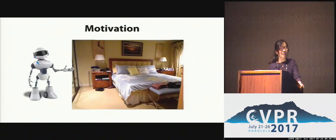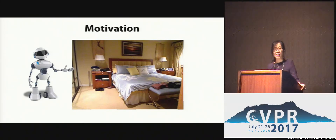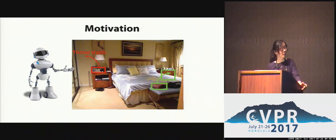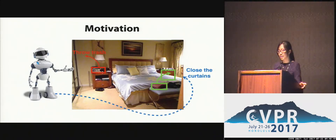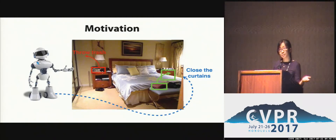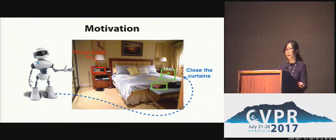Let's start with the following scenario. Imagine you ask a robot to clean up your bedroom. The task may involve throwing away your trash, putting your clean clothes back in your dresser, or walking to the other side of the room to close the curtains. In order to complete all these tasks, the robot needs to navigate around and manipulate many objects in the room, which requires an understanding of the full 3D structure of the environment as well as the semantics.